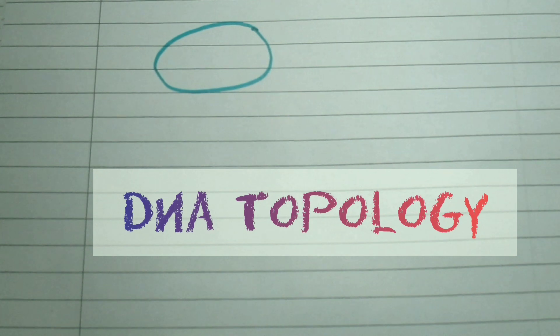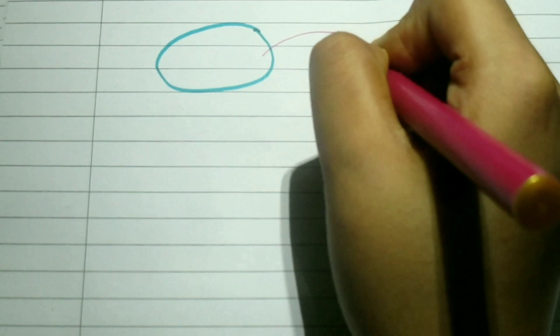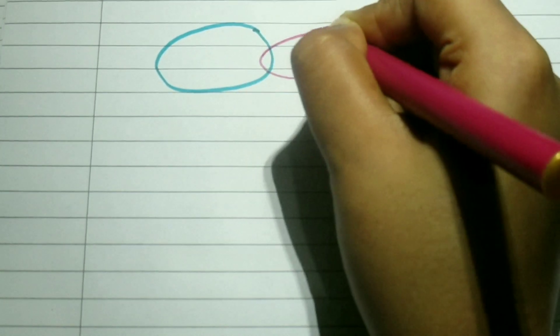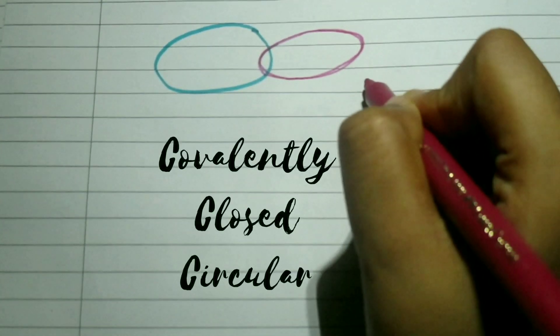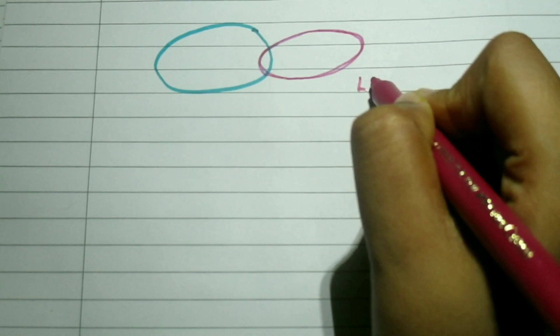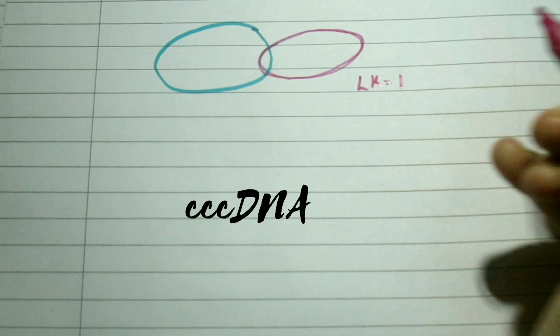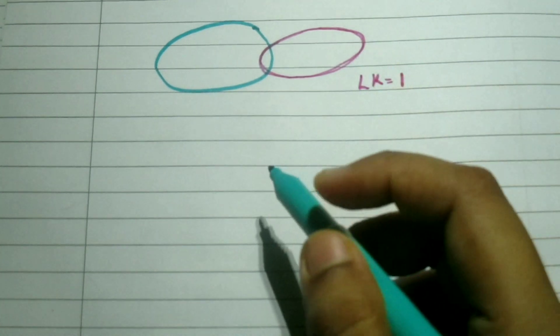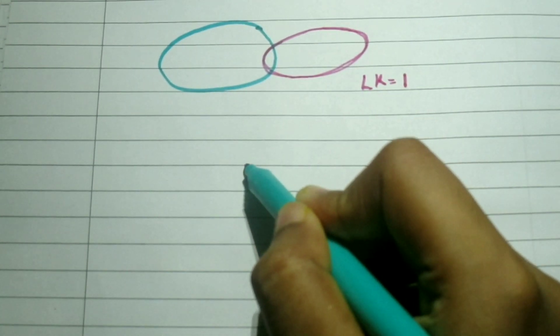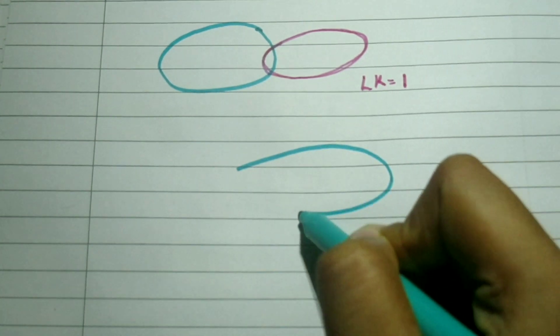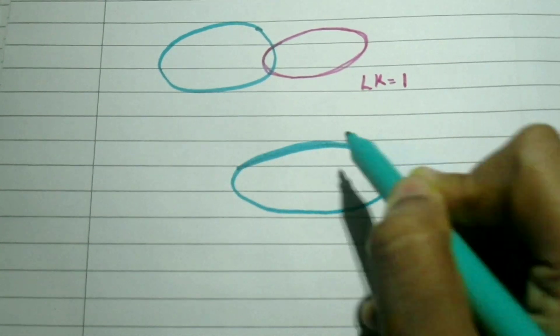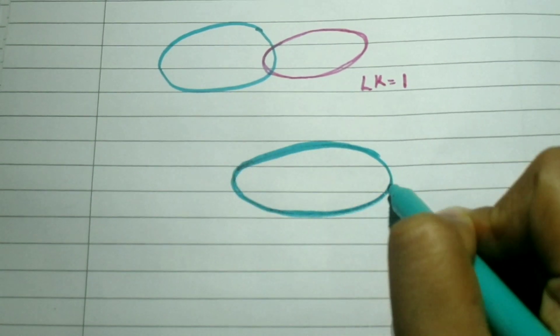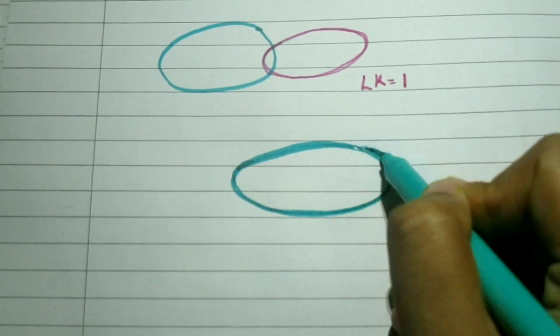The field of topology provides some ideas that are useful to the discussion of DNA supercoiling, particularly the concept of linking number. Let us consider the topological properties of covalently closed circular DNA, which is referred to as CCC DNA. Because there are no interruption in either polynucleotide chain, the two strands of CCC DNA cannot be separated from each other without the breaking of a covalent bond.